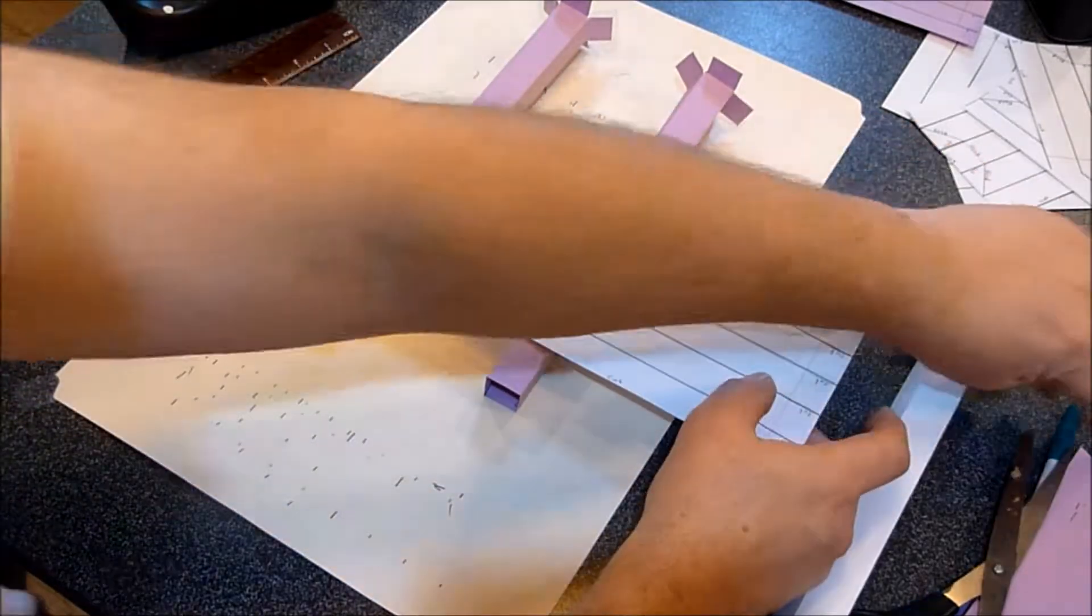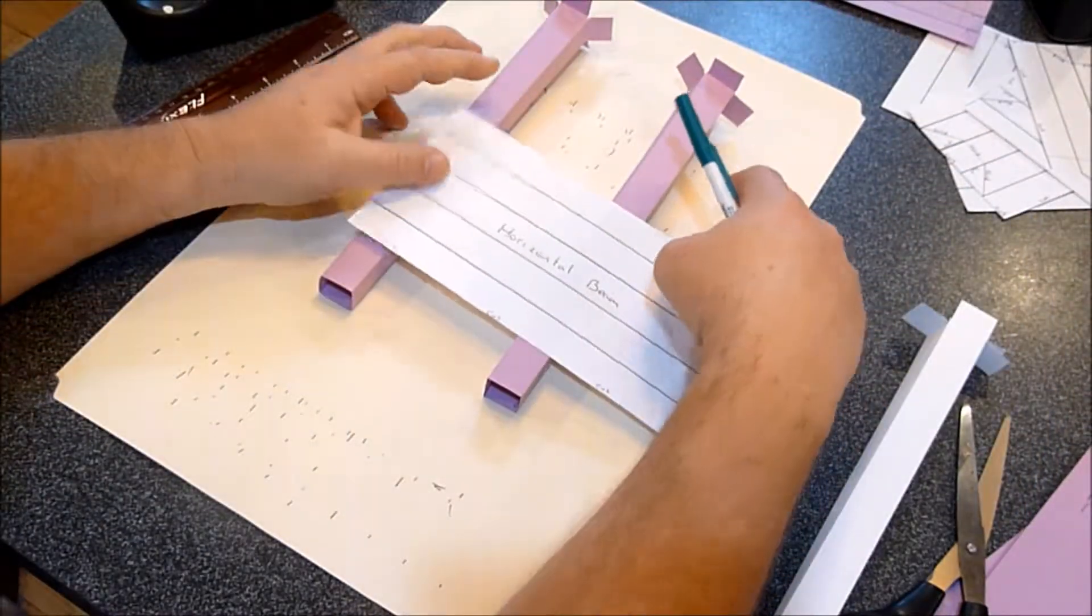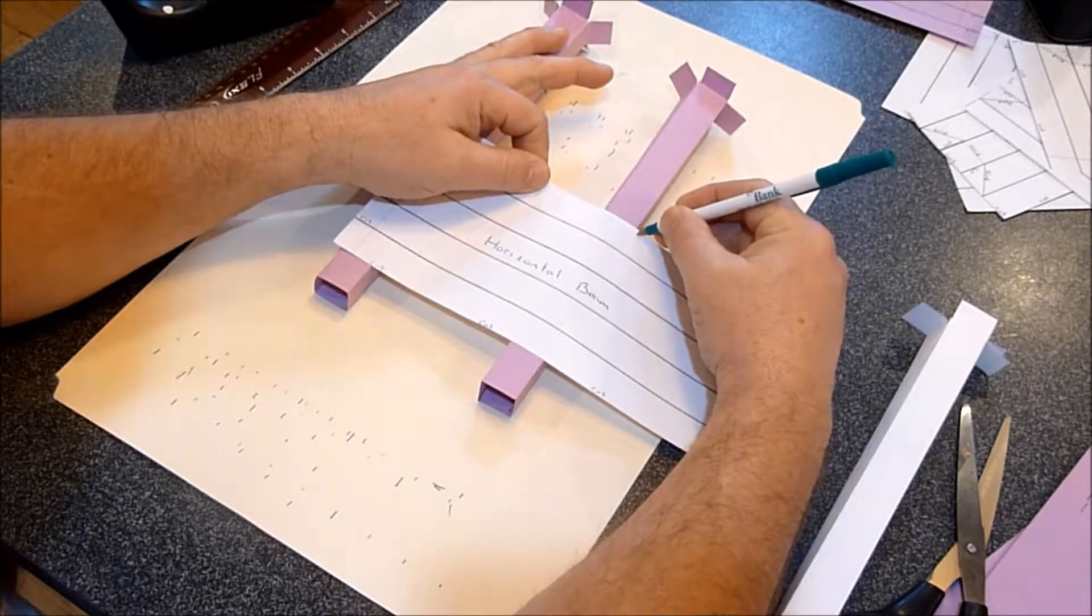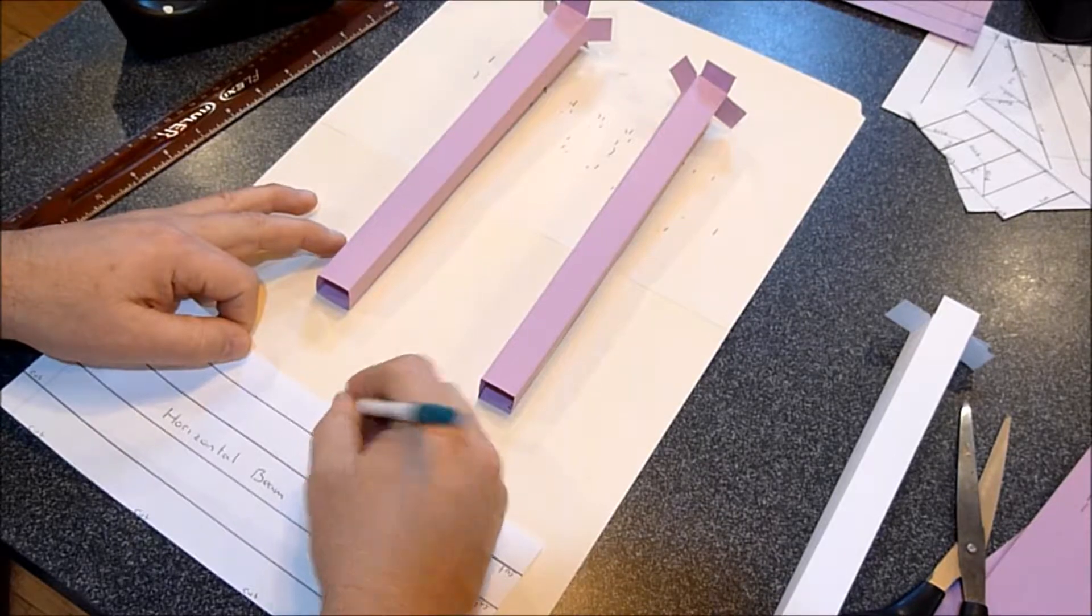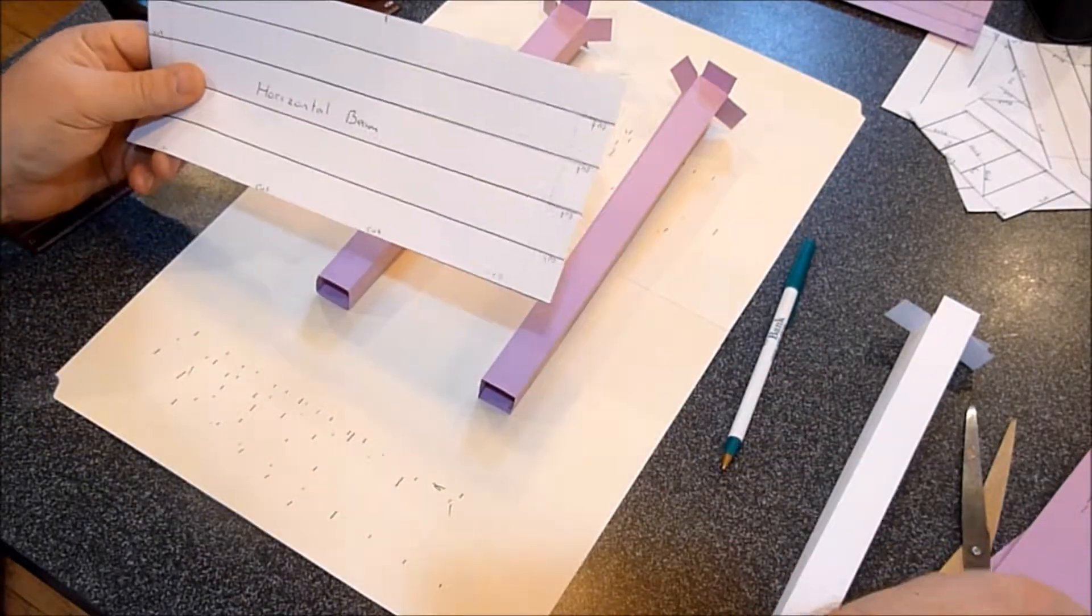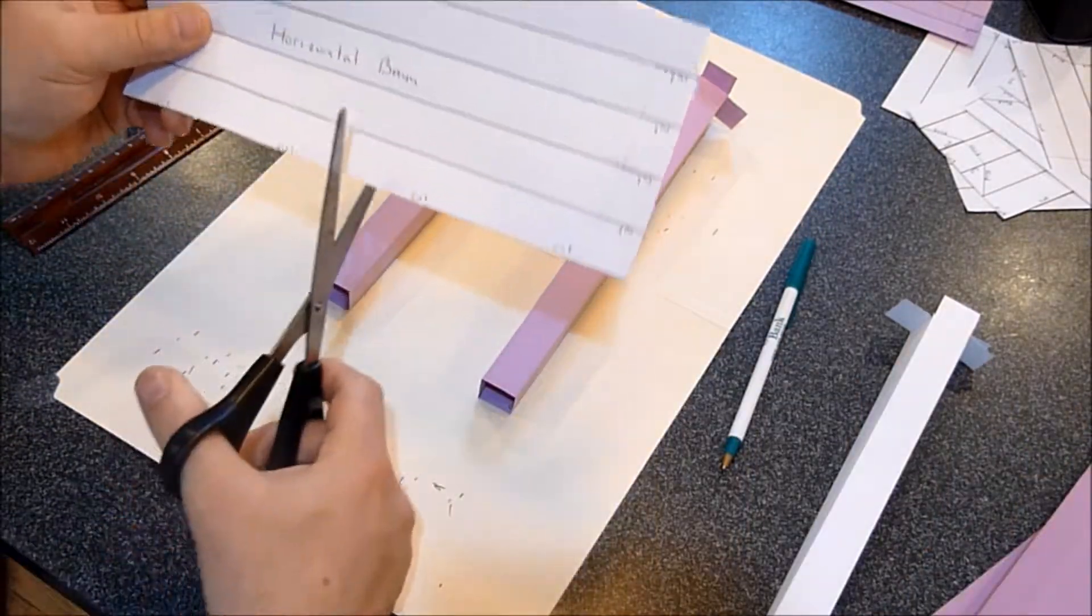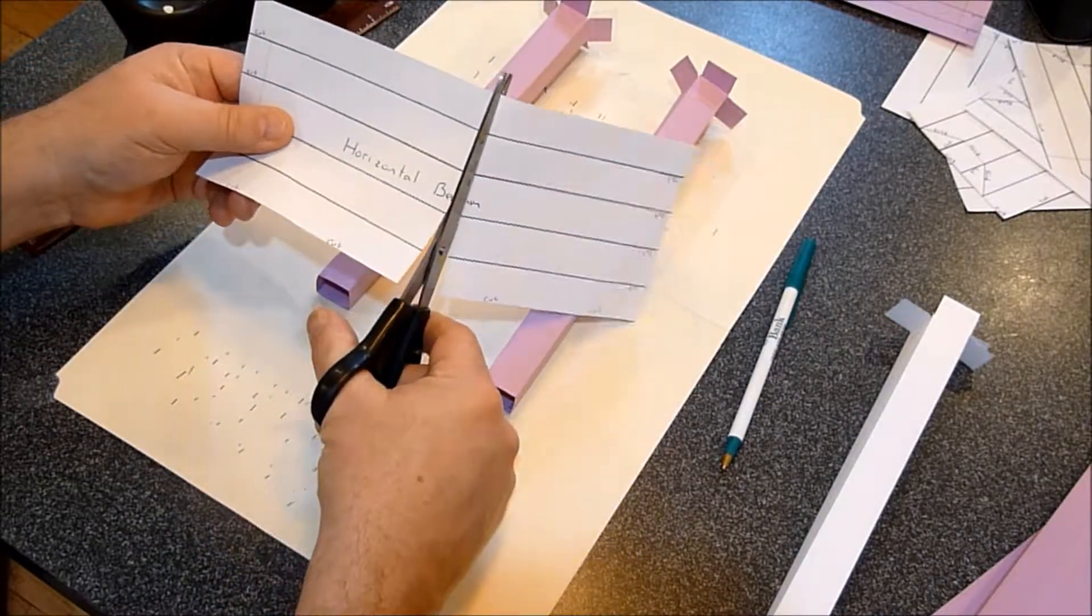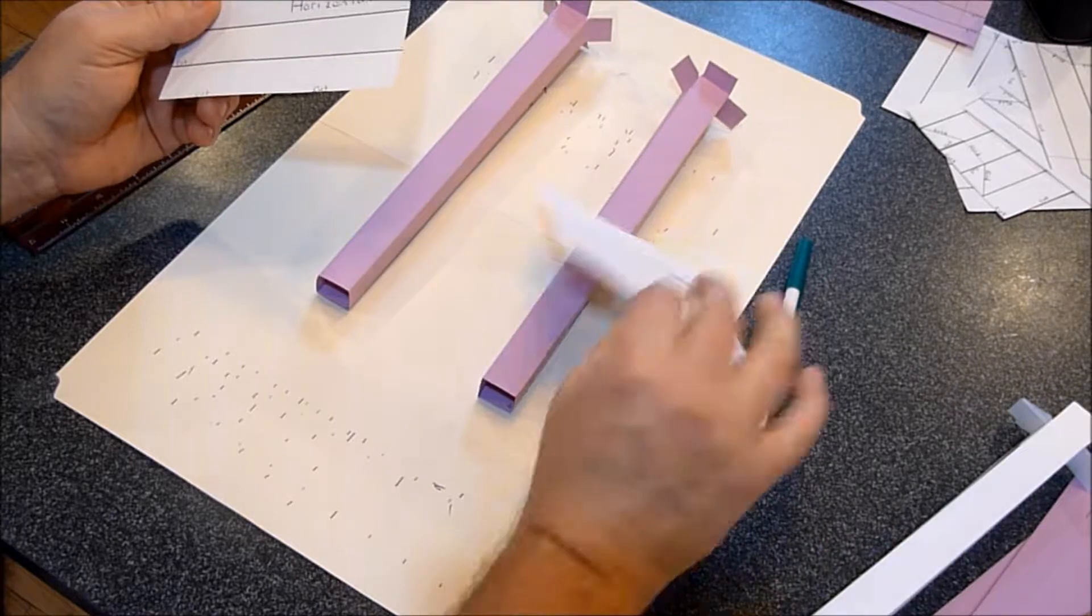And you can use your marker or your pen and you can just make a little line. So I made a little line here. All you do is cut it on that line and now this is your shorter beam.